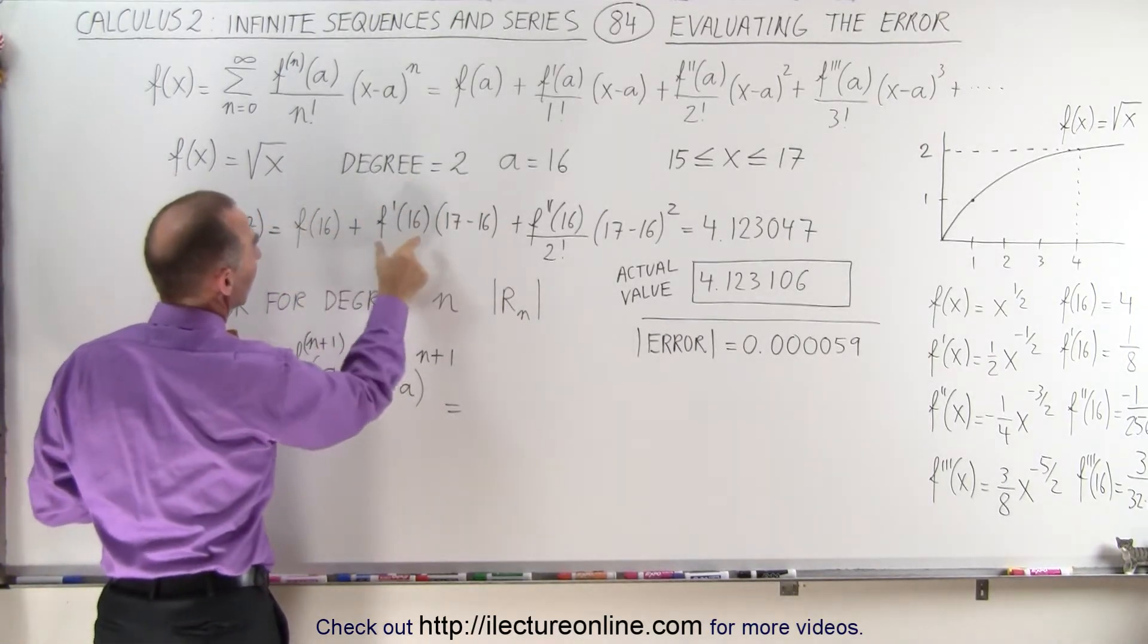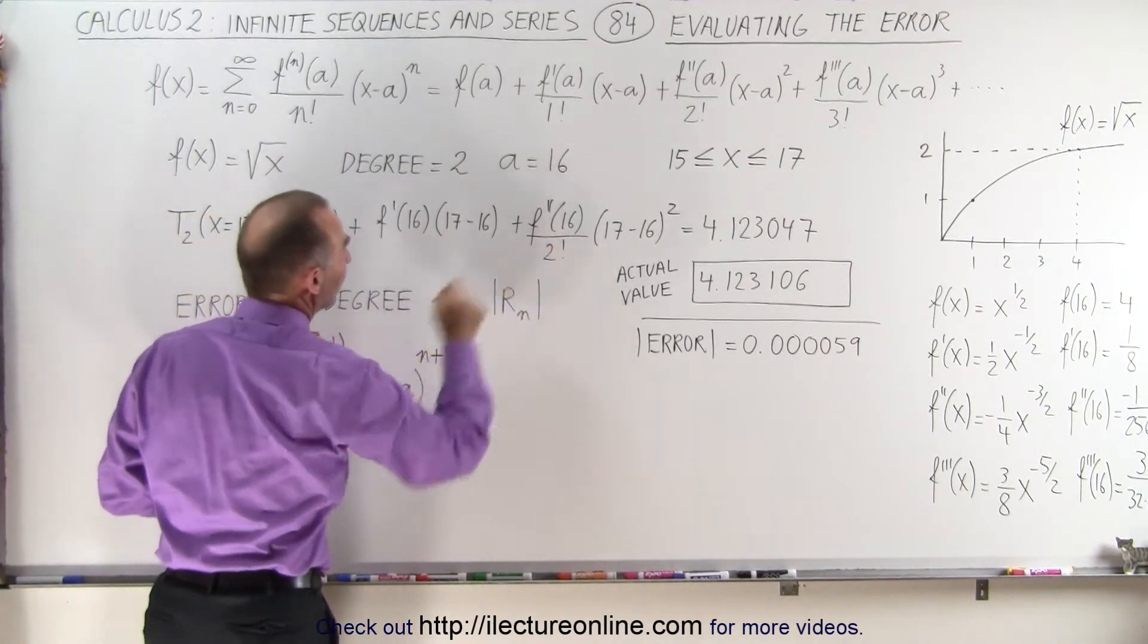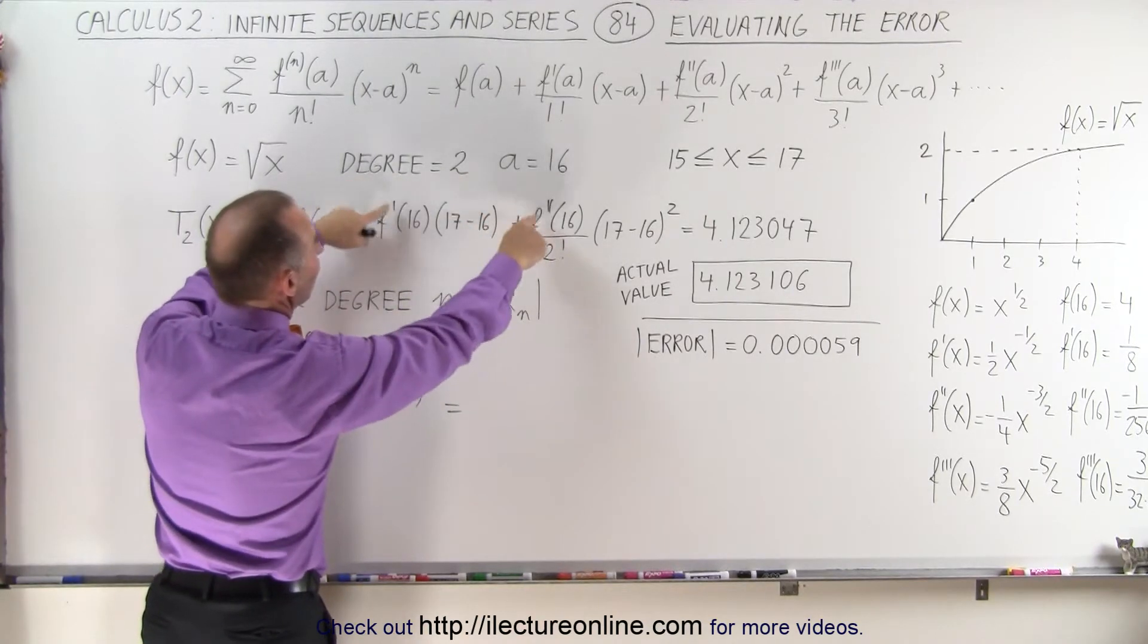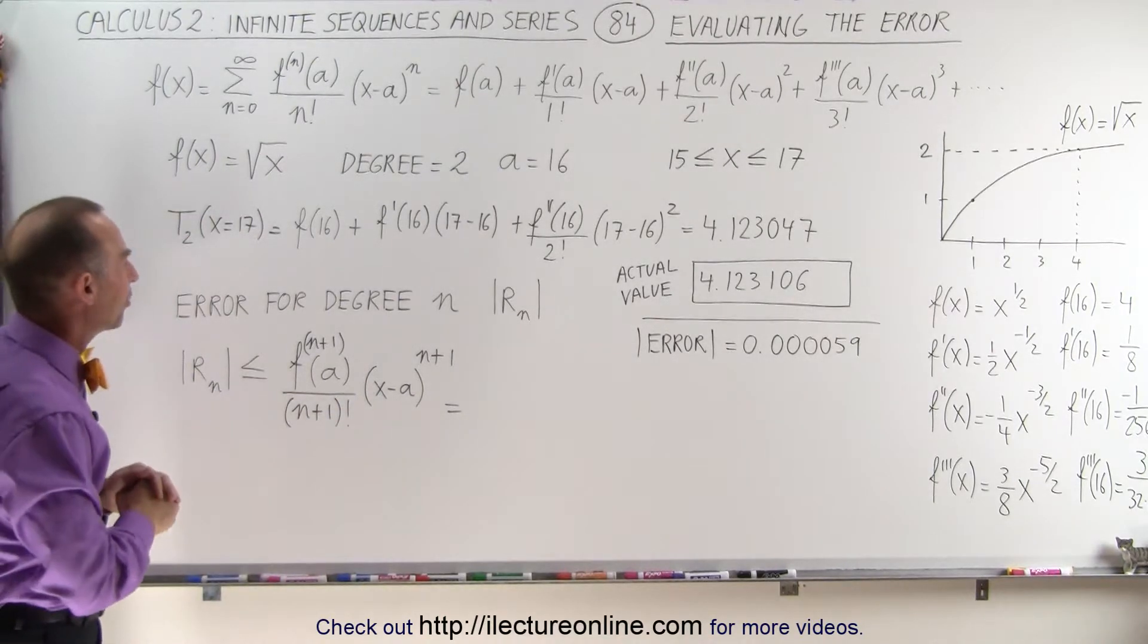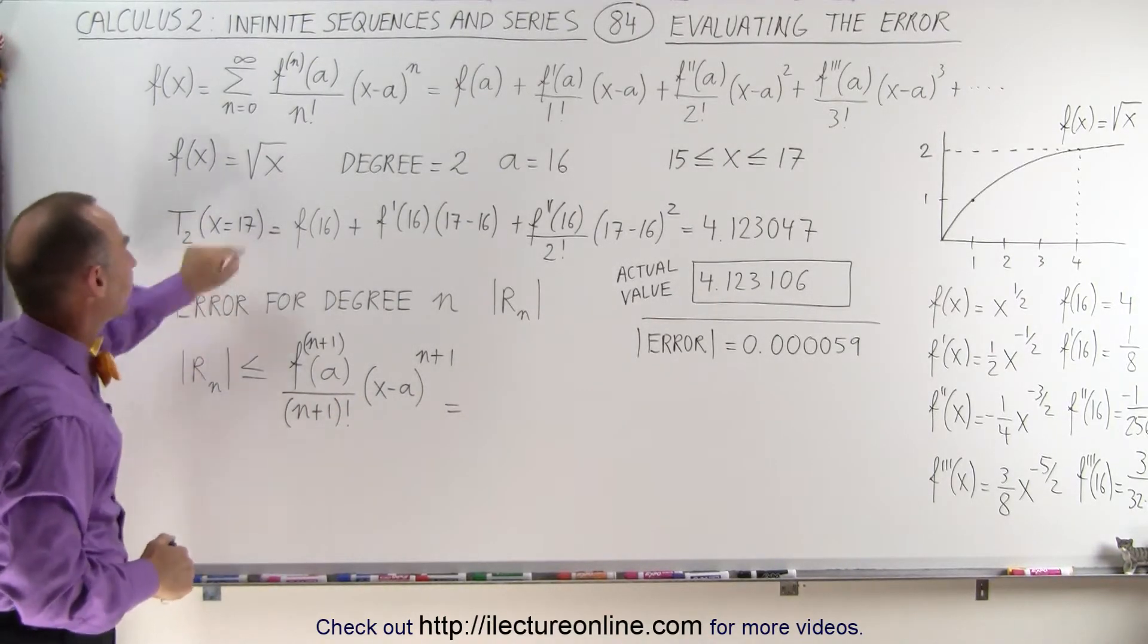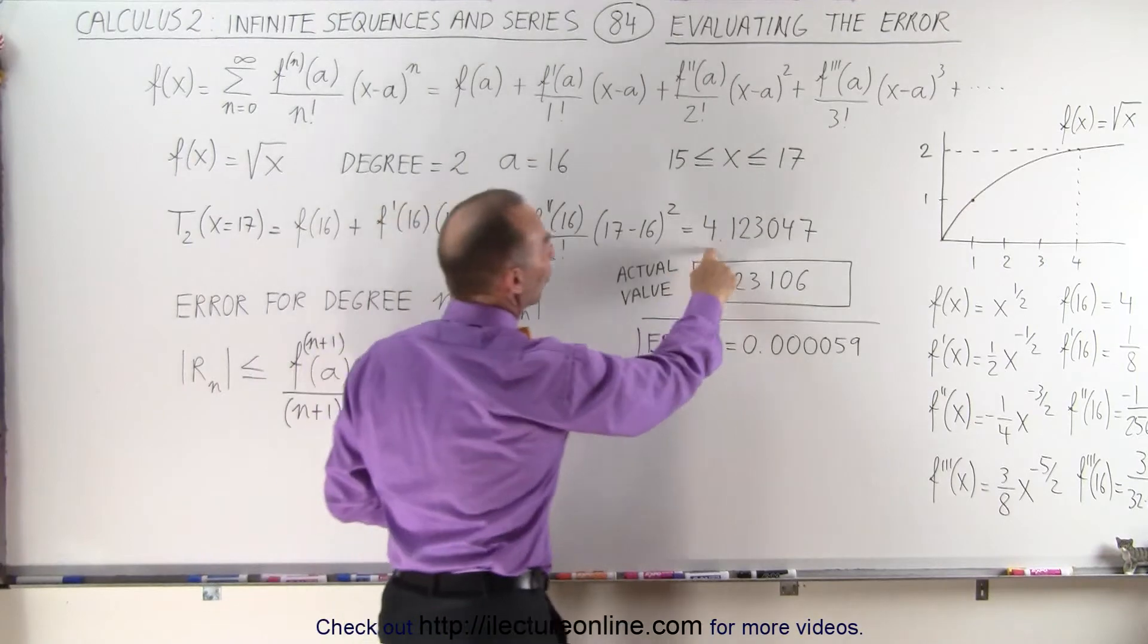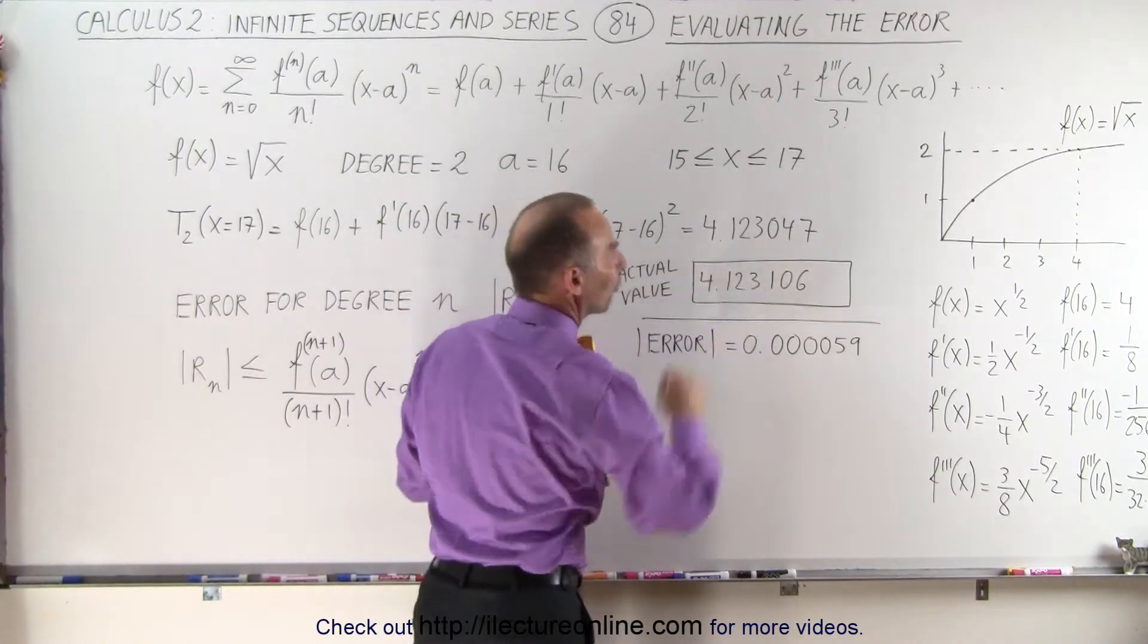we have the first term, the f prime term, and the f double prime term. The degree number represents the number of derivative terms that we have in our Taylor series expansion. When we evaluated for x equals 17, we got a value of 4.123047.